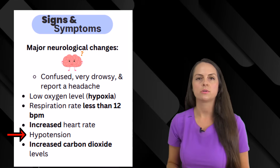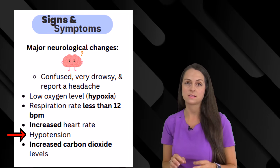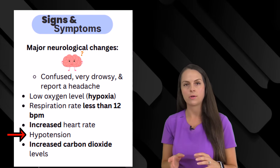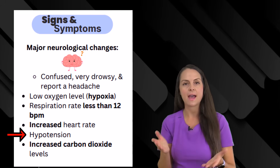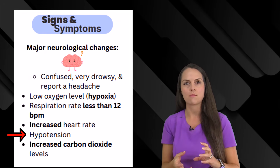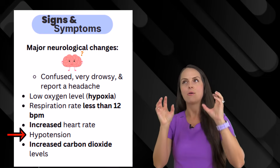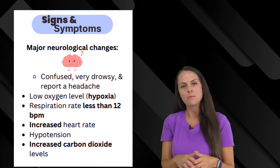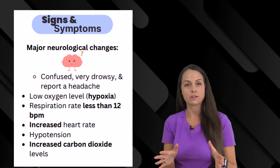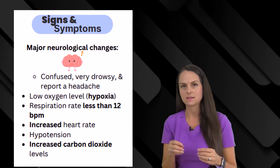Because oxygen levels are dropping, the body senses this and increases heart rate in hopes of getting more oxygen throughout the body. They can also have low blood pressure. In clinical practice, I've noticed neuro changes and hypoxia as the biggest signs tipping me off to a possible acid-base imbalance. For example, I had a patient come back from surgery — alert and oriented before — but as they were supposed to be coming off sedation and recovering, they progressively got worse: confused, didn't know where they were, and would just nod off mid-conversation. Their O2 sat was plummeting. We notified the doctor, got an arterial blood gas, and yes, the patient was in respiratory acidosis.